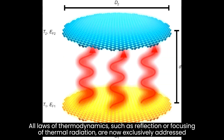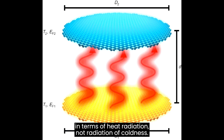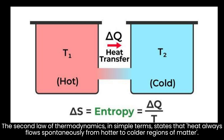All laws of thermodynamics, such as reflection or focusing of thermal radiation, are now exclusively addressed in terms of heat radiation, not radiation of coldness. The second law of thermodynamics, in simple terms, states that heat always flows spontaneously from hotter to colder regions of matter.